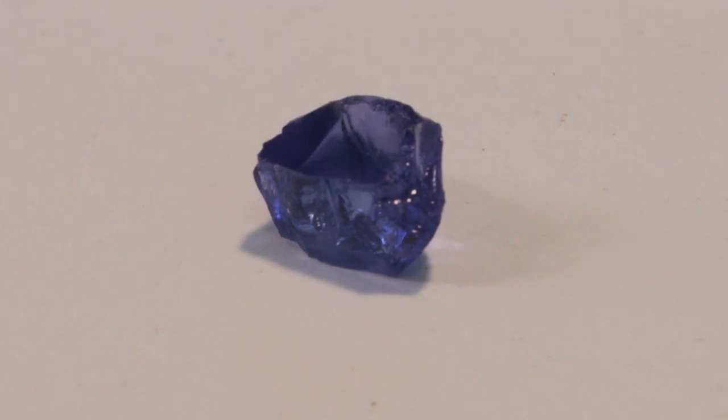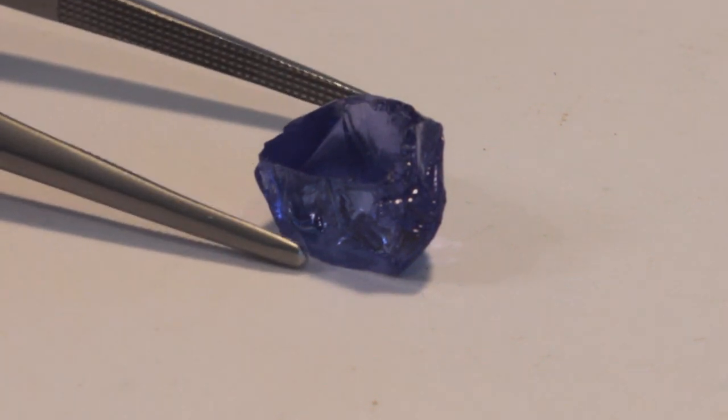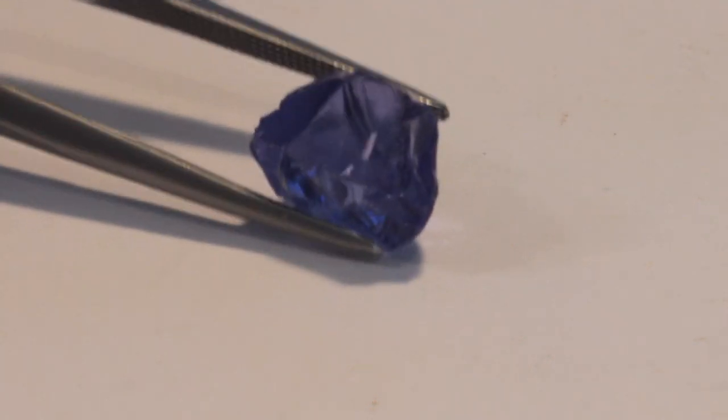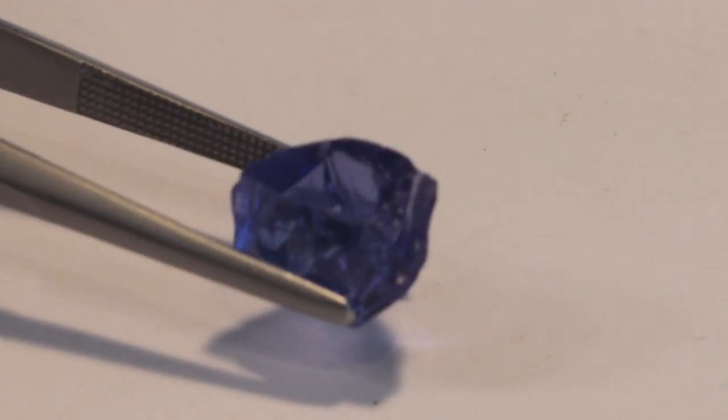Unlike most tanzanite, the shape of this rough also lends itself to a round design, like a Portuguese, which is one of my favorite designs to cut. This tanzanite has a deep blue and purple, and if I cut it right, it would cut a dream-come-true tanzanite round Portuguese-cut gemstone.